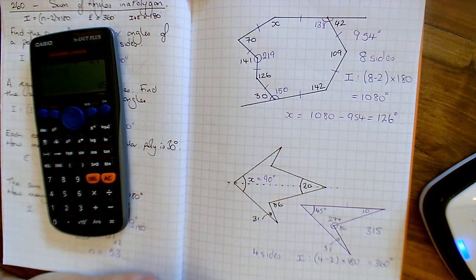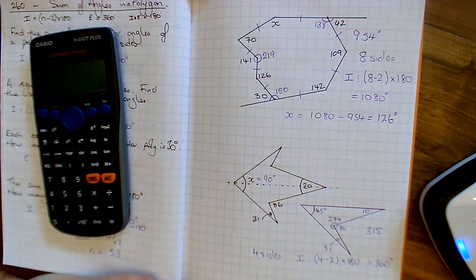And that's it for sum of angles in a polygon, task 260. Have a go with yours. Let's go.